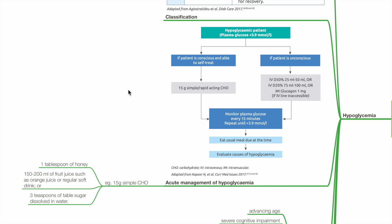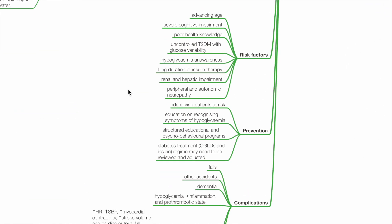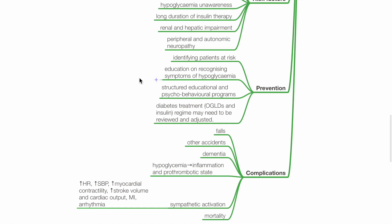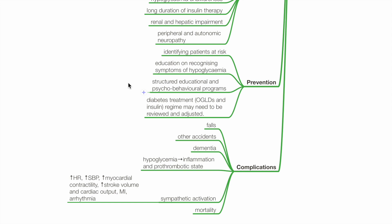Risk factors for hypoglycemia include advanced age, severe cognitive impairment, poor health knowledge, uncontrolled type 2 diabetes mellitus with glucose variability, hypoglycemia unawareness, long duration of insulin therapy, renal and hepatic impairment, and peripheral and autonomic neuropathy. Prevention includes identifying patients at risk, education on recognizing symptoms of hypoglycemia, structural, educational, and psycho-behavioral programs, and diabetes treatment regime adjustment.